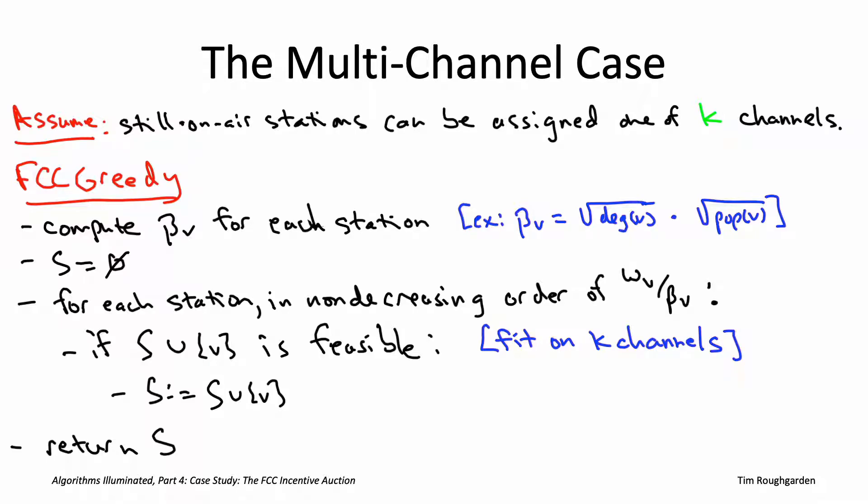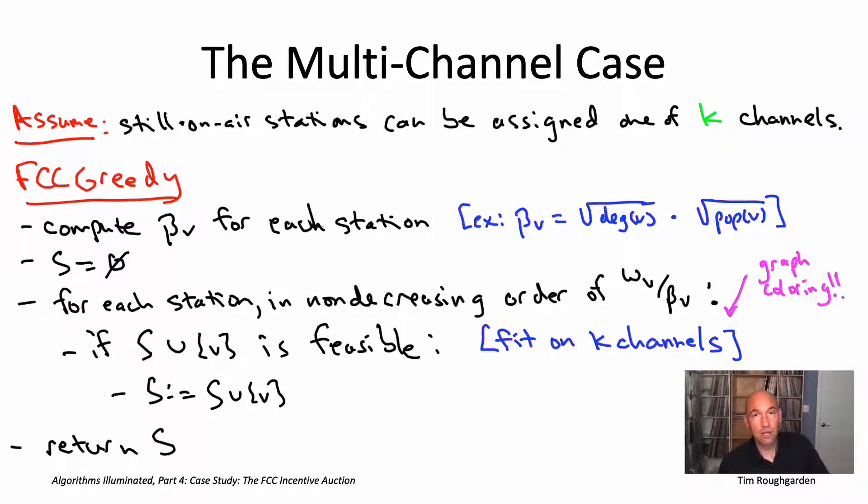Feasibility means that the stations can all be on the air at the same time without interference. Now we have K available channels. So being on the air at the same time without interference means there should be an assignment of the stations, both in S and the new station V, there should be a channel assignment of those stations to the K available channels, like the 23 available channels, so that no pair of stations with overlapping broadcast areas are assigned to the same channel. Do you recognize this computational problem? This is pretty much exactly the graph coloring problem that we last spoke about when we were discussing satisfiability solvers.